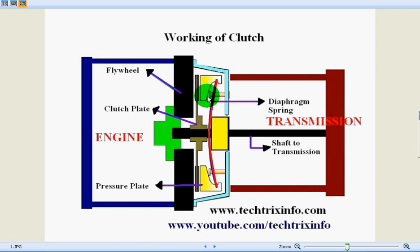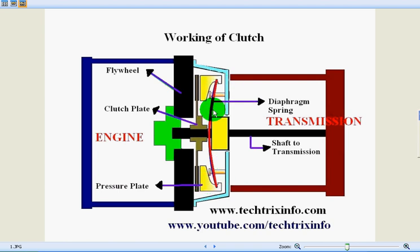The main components of a clutch are shown here. We have the clutch plate, the pressure plate, and the diaphragm spring. These are the three main components of a clutch.